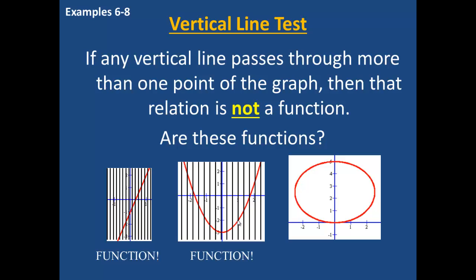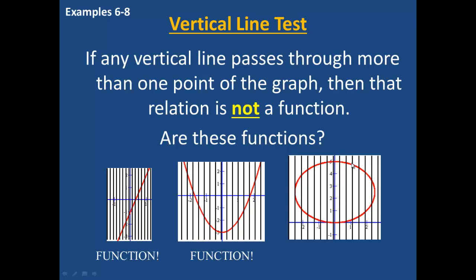In this example, the graph is an oval. If I were to draw a vertical line at x equals 1, I would actually cross this oval twice. As you can see, there is a wide variety of vertical lines that can be drawn, and many of these would cross this oval twice. So no, this is not a function.